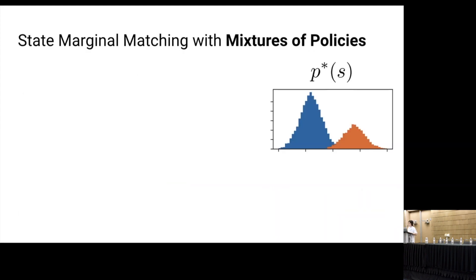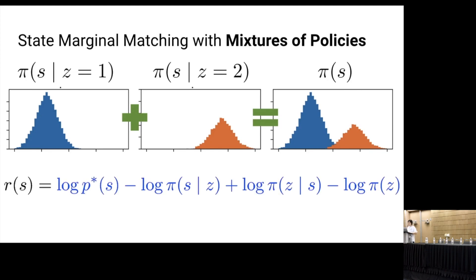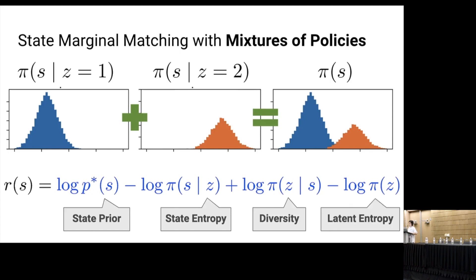Finally, we use a mixture of policies to be able to capture complex target distributions more easily. So each latent condition policy has its own state distribution, and the state marginal distribution takes a weighted average of them. In this mixture case, our objective produces a reward with a nice decomposition. The first state prior term says to go to states with high density under the target distribution. The second state entropy term says explore a wide range of states. The third diversity term says the latent condition policies should visit different states. And finally, the last latent entropy term says to explore a wide range of latent variables z.